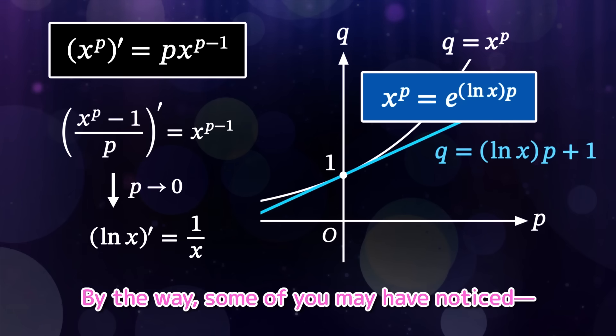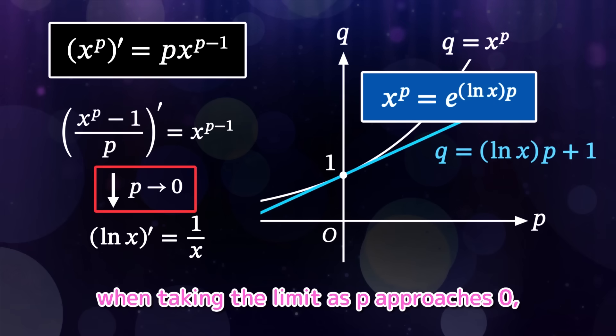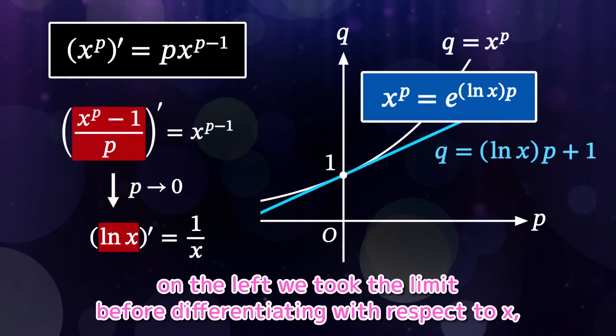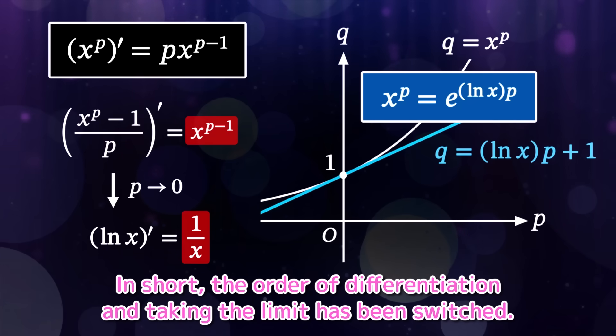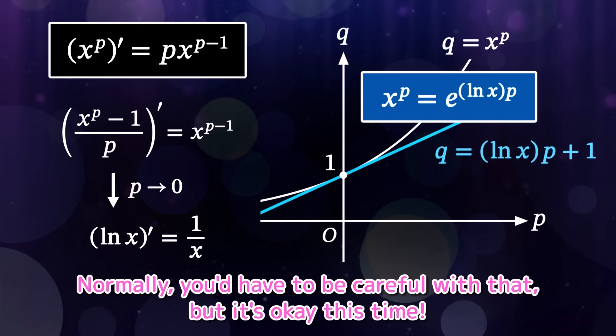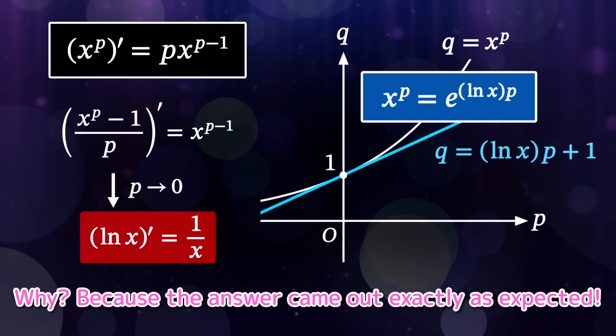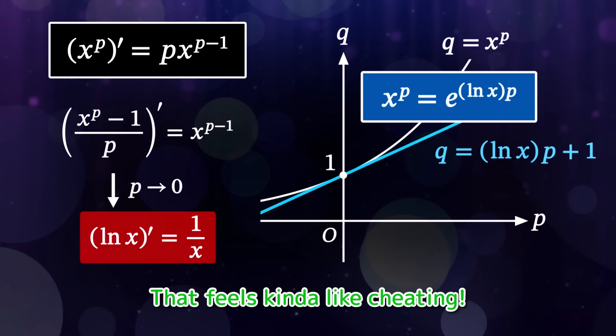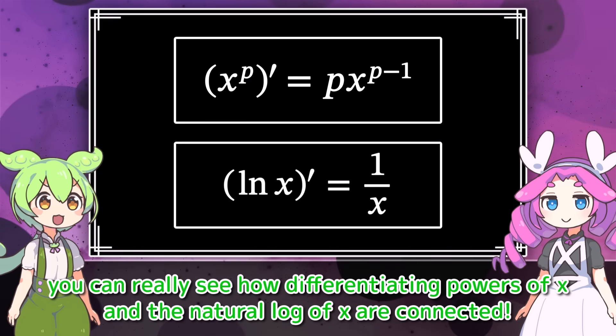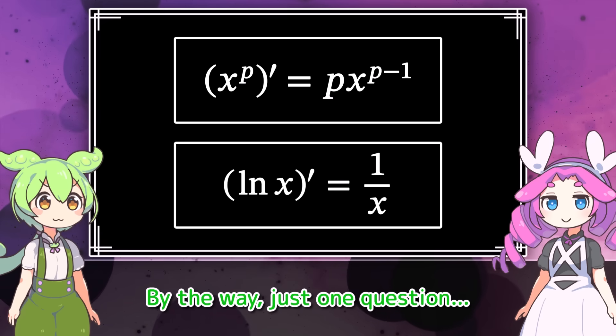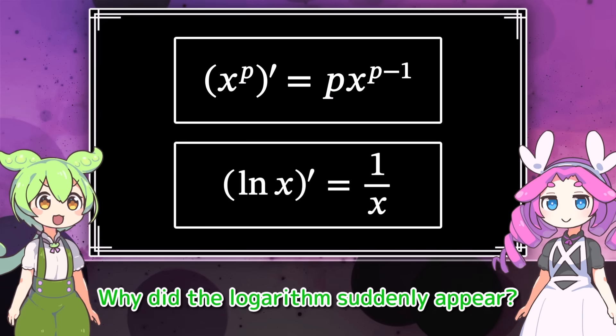By the way, some of you may have noticed, when taking the limit as p approaches 0, on the left, we took the limit before differentiating with respect to x, while on the right, we took the limit after differentiating. In short, the order of differentiation and taking the limit has been switched. Normally, you'd have to be careful with that, but it's okay this time. Why? Because the answer came out exactly as expected. That feels kinda like cheating. But thinking this way, you can really see how differentiating powers of x and the natural log of x are connected. Looks like you got it. By the way, just one question. Why did the logarithm suddenly appear?